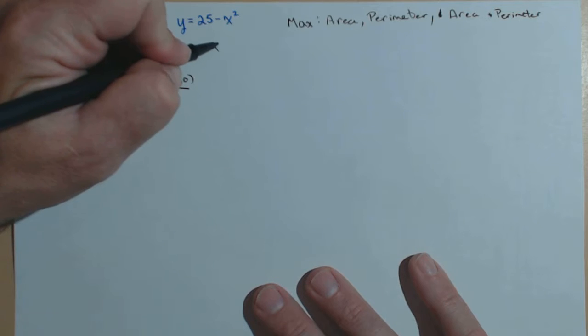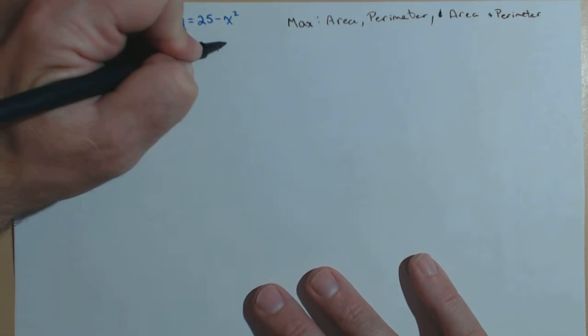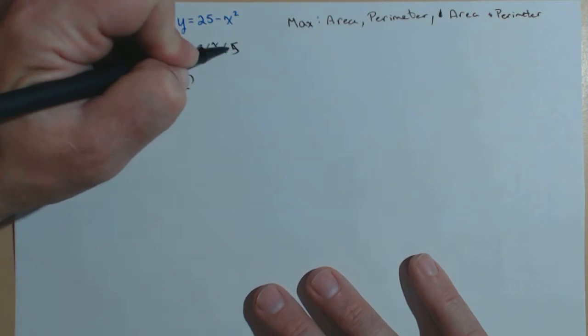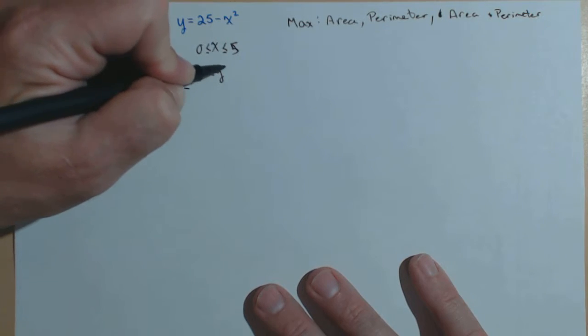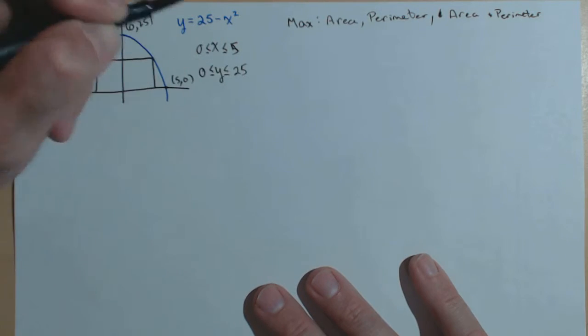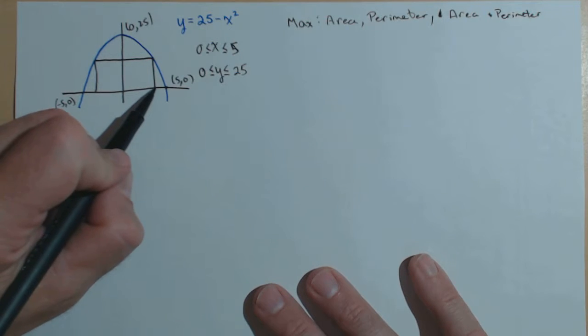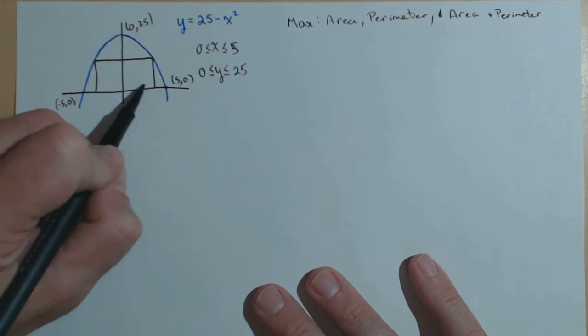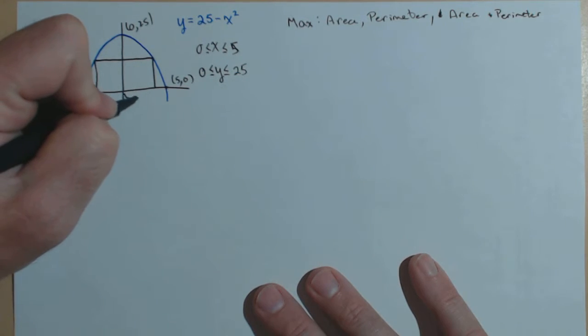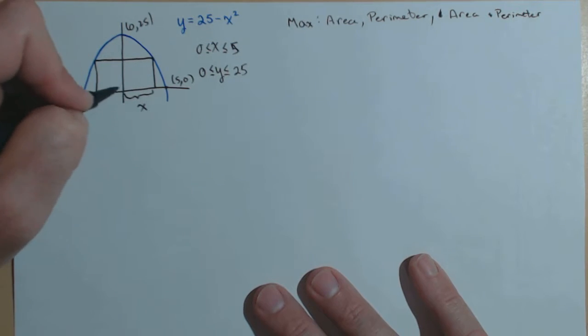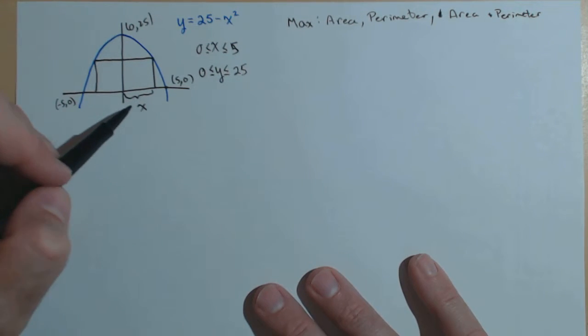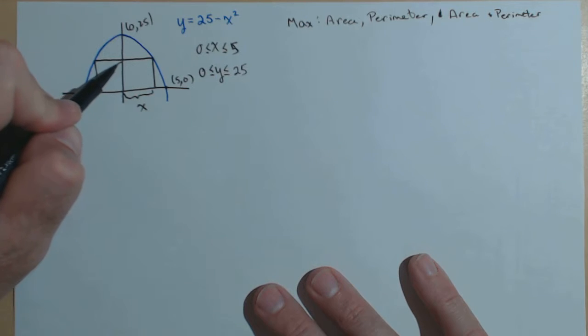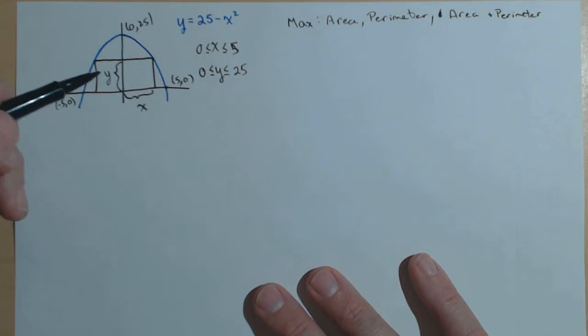So that tells us that x is going to be in between 0 and 5, and y is going to be in between 0 and 25. Now, you might be wondering why x is between 0 and 5 and not negative 5 and 5. I'm deciding to let x just be this part right here, only half of the width, because it matches up with our Cartesian plane. And there's going to be my y. So I'm basically measuring x and y like we would on a normal graph in rectangular coordinates.